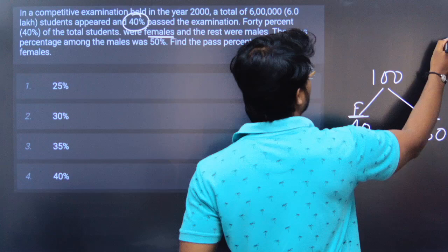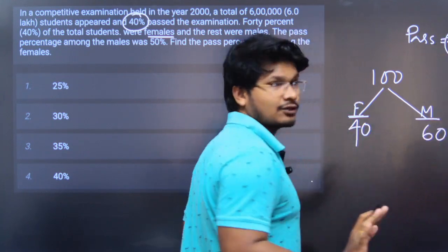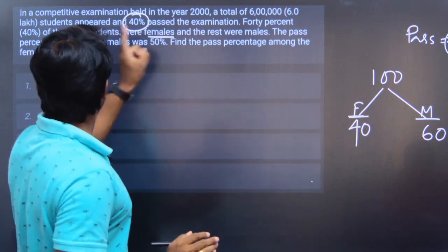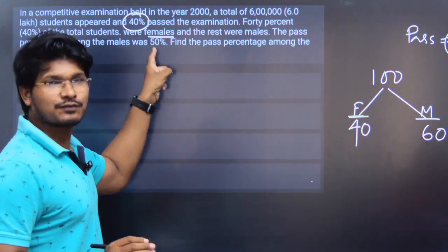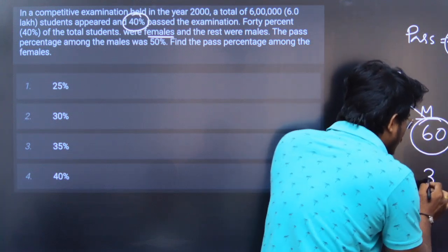The pass percentage among males was 50%. Since males are 60% of the total, 50% of 60 equals 30. So 30% of all students are males who passed.